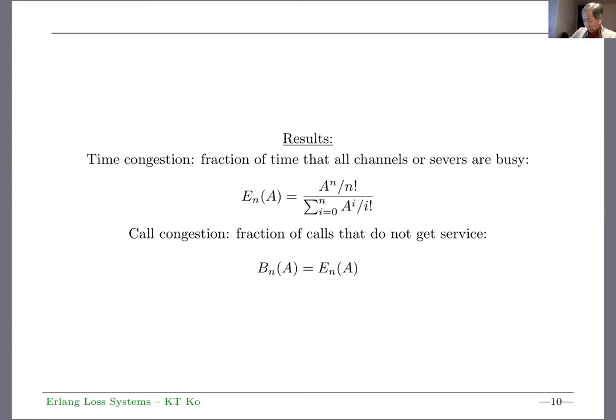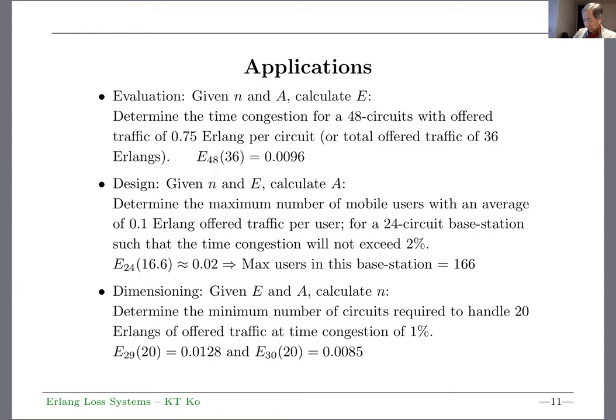The next one is applications. In the Erlang Loss system, there are three terms: traffic intensity, number of servers, and E, the time congestion. The first application is you calculate E. So you're given N and A. For example, you have 0.7 Erlang per circuit with 48 circuits, so A equals 36, and you calculate E.